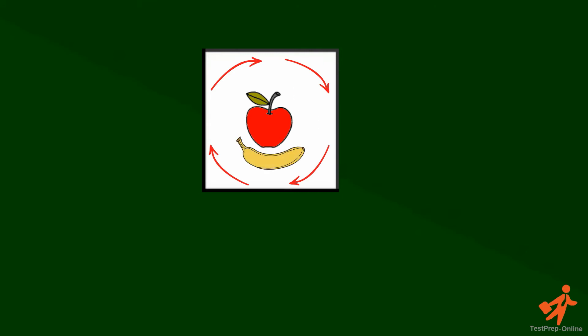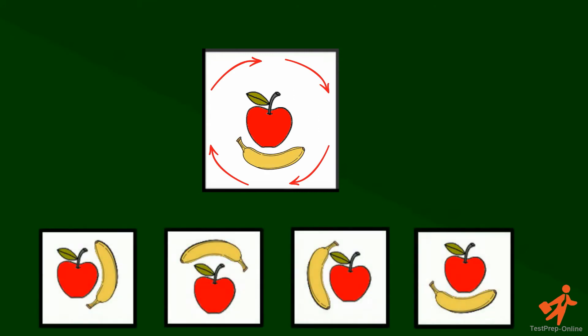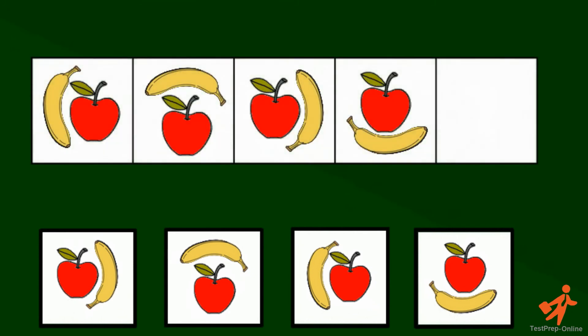So now that we've found the pattern we need to find the right answer choice. The question we need to ask ourselves is, where should the banana be in the last box if it continues its movement around the apple? Very good. The correct answer is C.